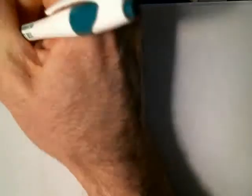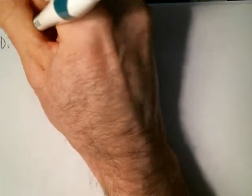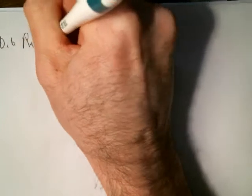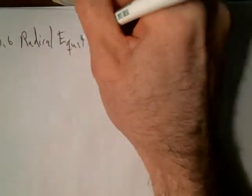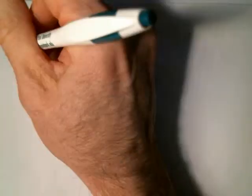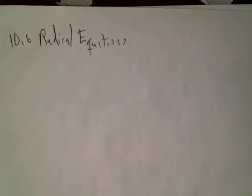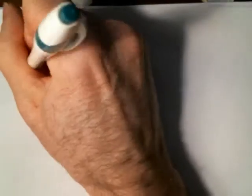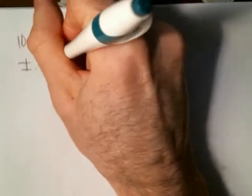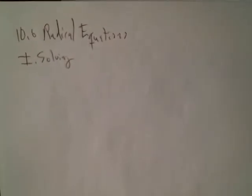Welcome back. Section 10.6 Radical Equations. We want to solve equations that have radicals in them, and the way we'll do it is by raising both sides of the equation to some power to eliminate the roots.